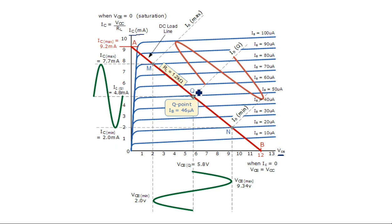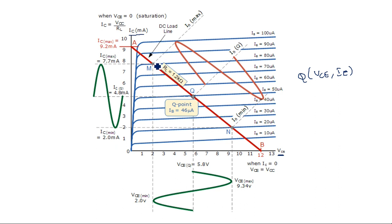The Q-point (quiescent point) is defined at a particular VCE and IC value, corresponding to a particular input voltage VBE. The Q-point can shift in the upward or downward direction. The maximum peak corresponds to maximum IB current and the minimum peak corresponds to minimum IB current.